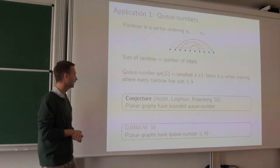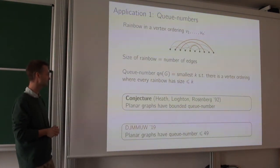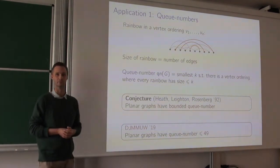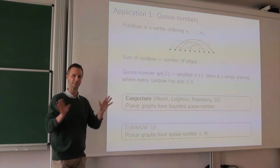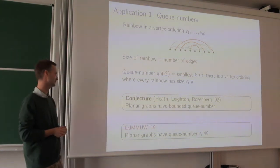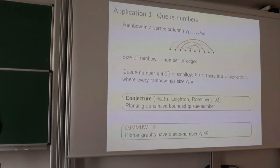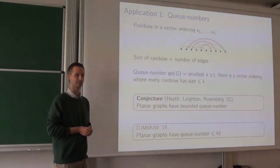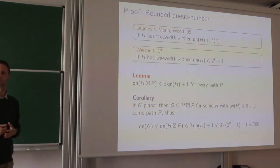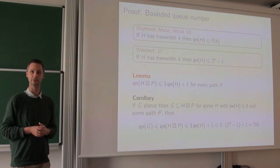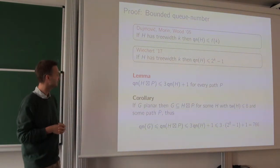The Q number is a min-max: it's the minimum over every ordering of the maximum size of a rainbow in that ordering. There was a conjecture from the early 90s that planar graphs have bounded Q numbers. Interestingly, one of the authors also conjectured in another paper that planar graphs have unbounded Q numbers, so whatever the outcome it was right. Using this product structure, we got a bound of 49, which is essentially the best known bound today. In this lecture I'll show that it is bounded, and we'll revisit this in the exercise session to improve the bound.